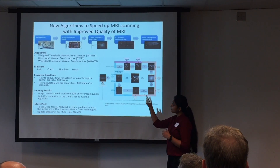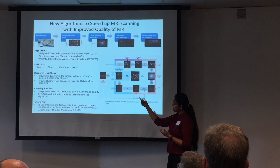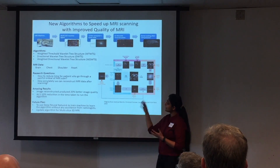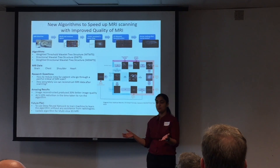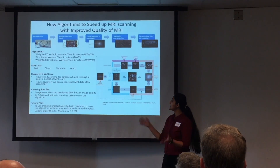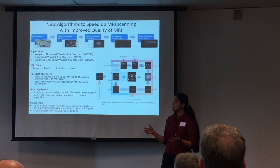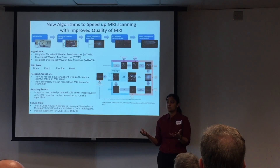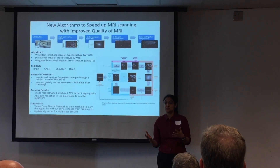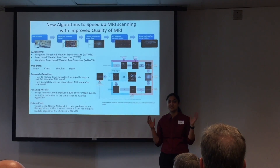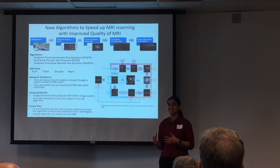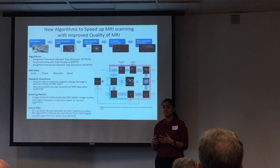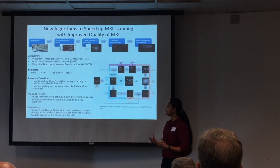First, the patient needs to lie on the sliding table and go into the rotating drum which has those electronic coils. And anybody who has been to the MRI machine knows that it's a very noisy place — it's like being under a jet engine.